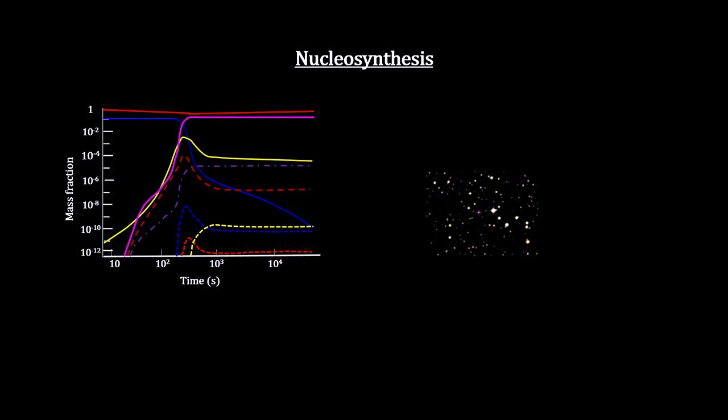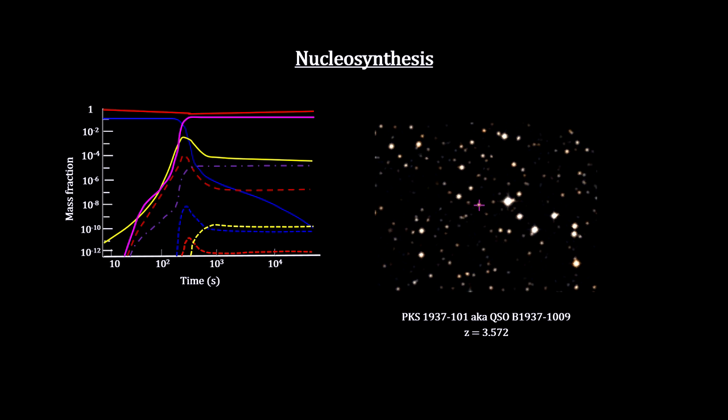The best way to measure the primordial percentages of these elements is to look at the spectra of distant quasars like this one.